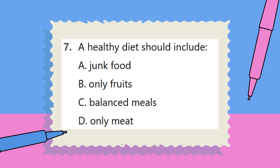Question 7. A healthy diet should include: A. Junk food. B. Only fruits. C. Balanced meals. D. Only meat.